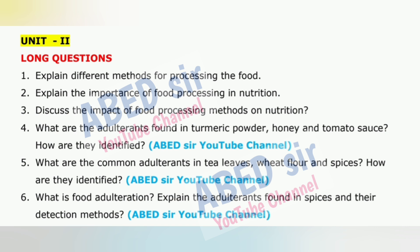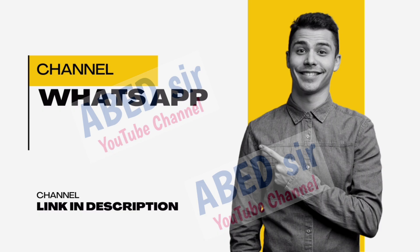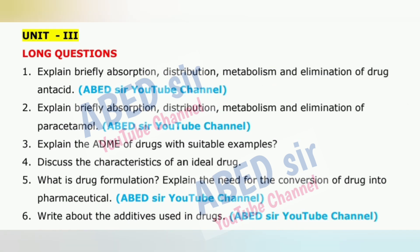Always start each answer on a new page. Write the question number clearly at the top left and center of the page. Don't miswrite or change question numbers. Use headings and subheadings and highlight them neatly — it makes your answer more readable. Use the last page as rough work and label it clearly. In the last 5 minutes, check all question numbers and quickly review your answers to fix any small mistakes.